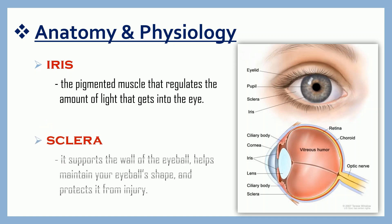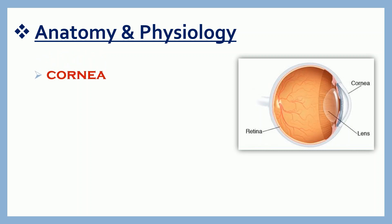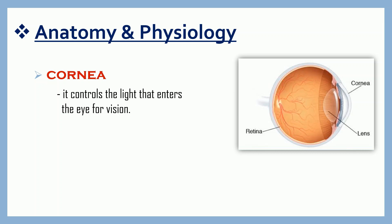Sclera. The sclera is the white part. It supports the wall of the eyeball, as you can see in the lower part of the photo. It helps maintain your eyeball's shape and protects it from injury. The sclera is covered by conjunctiva, which are clear mucous membranes that lubricate your eye. We also have the cornea. The cornea is the transparent part of the eye that covers the front portion. It controls the light that enters the eye for vision and provides approximately 65 to 75% of the focusing power of the eye.